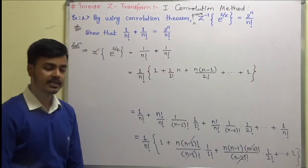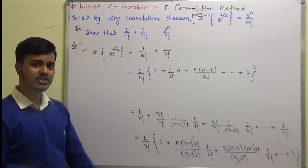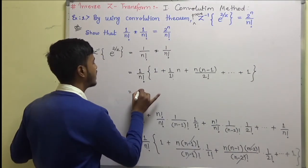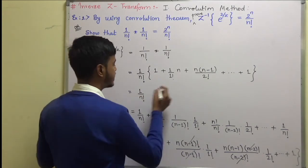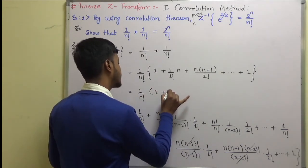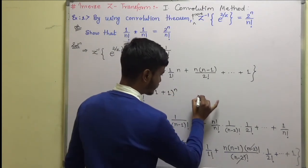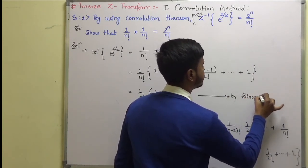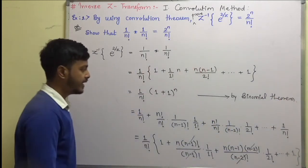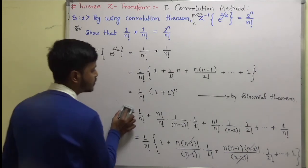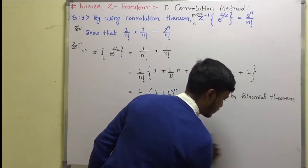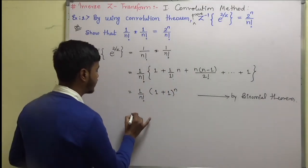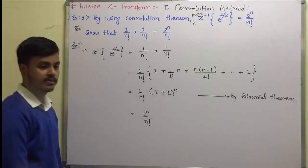Now, what is this expression? This is the binomial expansion of (a + b)^n where a = 1 and b = 1. So this is the binomial expansion of (1 + 1)^n = 2^n. Therefore the result is 1/n! times 2^n.